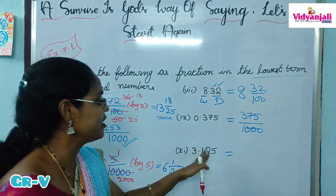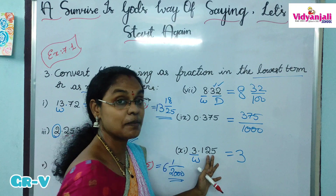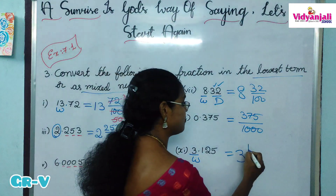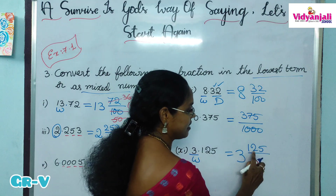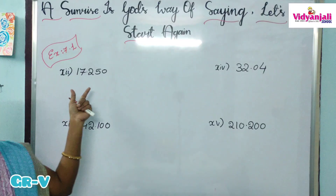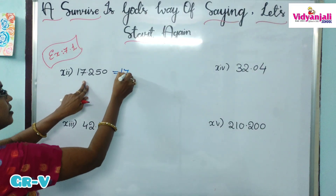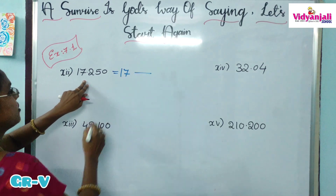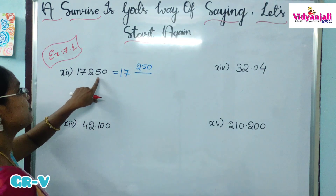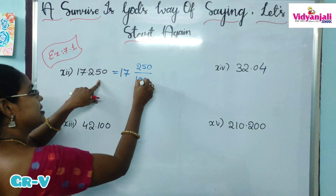Try this one: 3.175. Whole part is 3. The decimal part — we write 175 by 1000, because 175 has 3 digits, so 1 after 3 zeros. Next, 17.250: what is the whole part? 17 is the whole part. What is the decimal part? 250. In 250, how many digits are there? 3 digits. So the denominator will be 1 after 3 zeros: 1000.